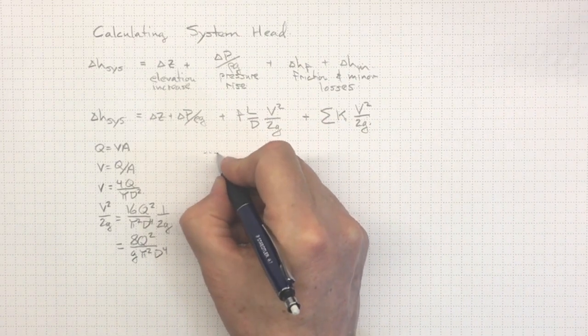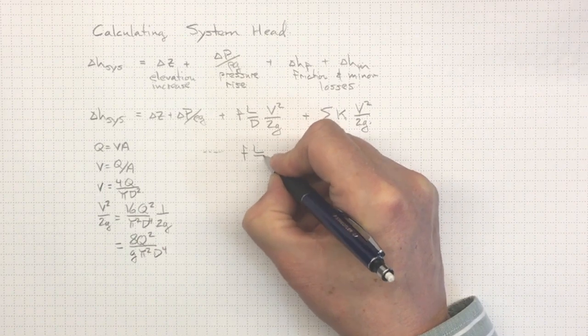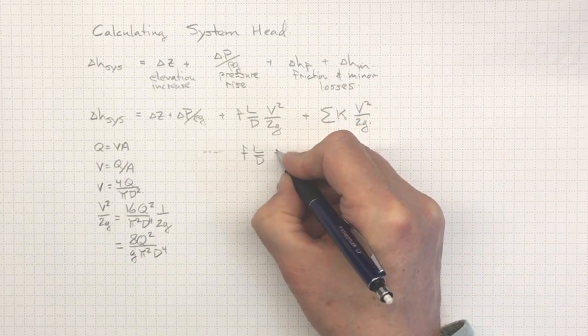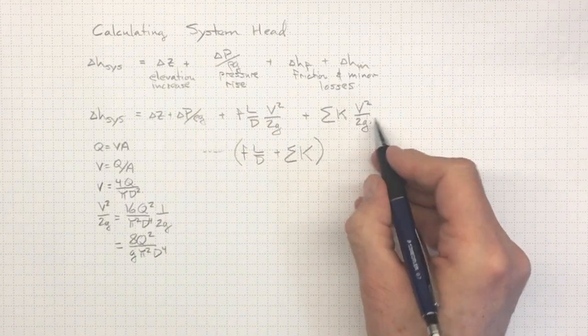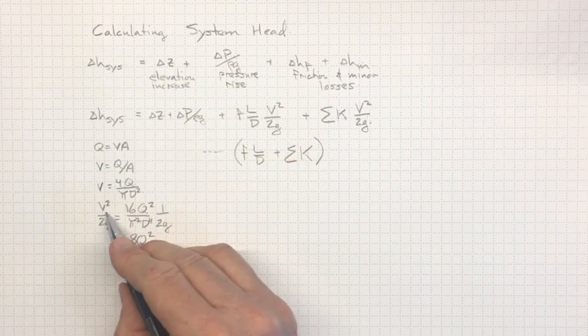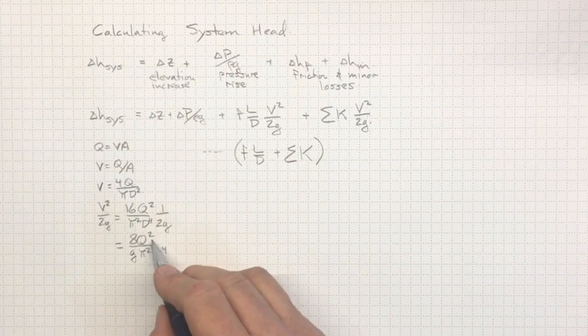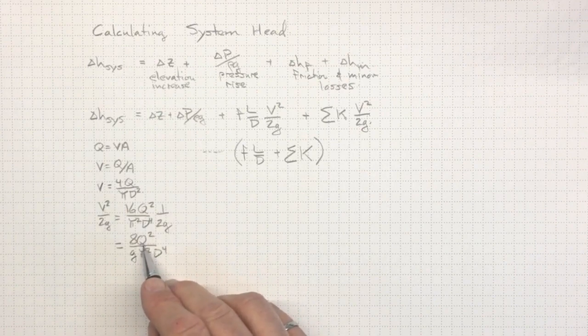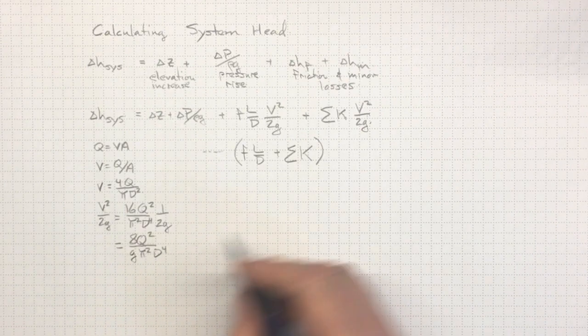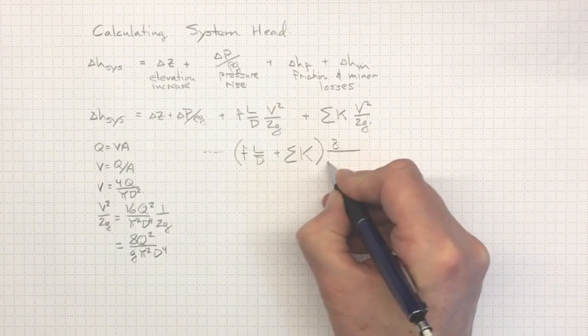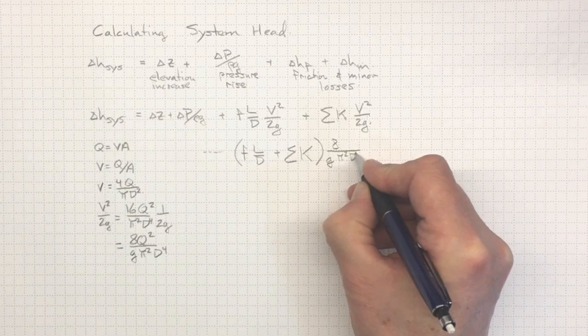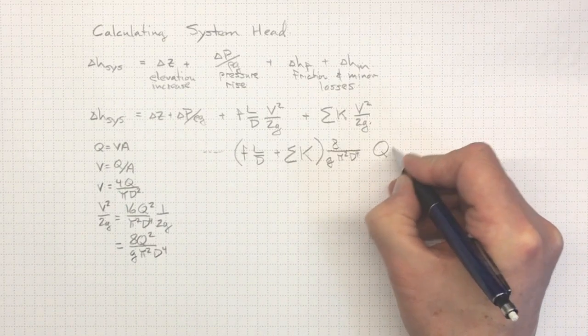So we can take this section up here, and we'll still have F L over D plus sigma K all times V squared over 2G. But we found out V squared over 2G down here depends on Q squared. And we'll wind up with 8 over G times pi squared D to the fourth times Q squared.